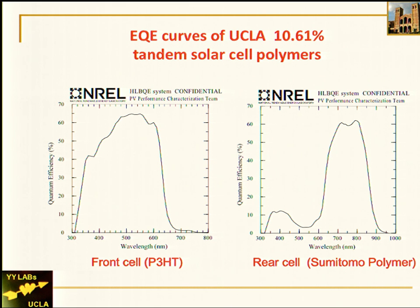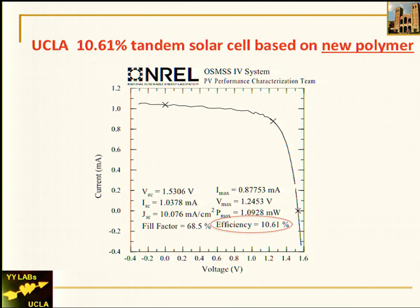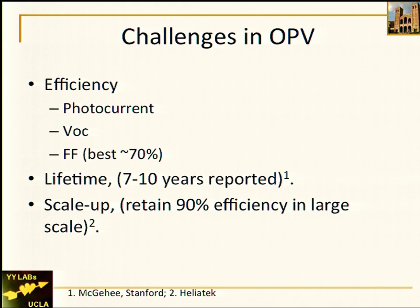This turned out to be a very nice collaboration with Sumitomo, who have a large library of different conjugated polymers that allowed us to work together. We later submitted the same device to NREL for certification at 10.6%. Internally we actually reached above 11%, but once we did the encapsulation, electrode degradation occurred — as Maria mentioned earlier, that has to be taken into consideration.